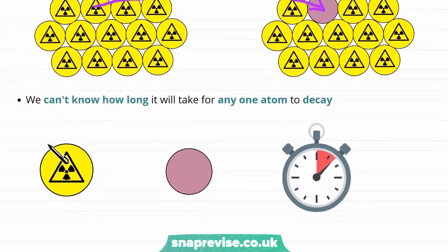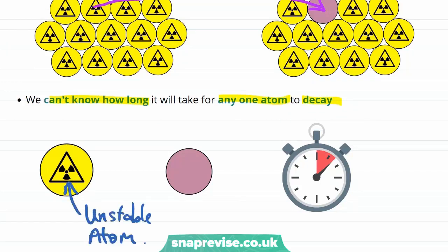An important and related point is that we can't know how long it will take for any one atom to decay. So let's say we're looking at this unstable atom here. And let's say you ask me, how long is this unstable atom going to take to decay into a more stable one? And the answer is not only that I don't know, but that you couldn't possibly know. It's a random event and we don't know how long it will take.